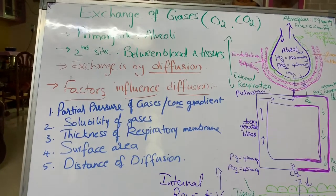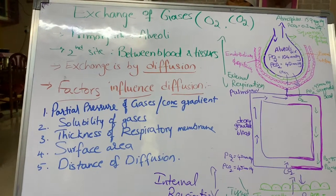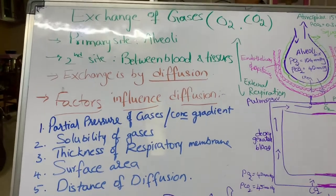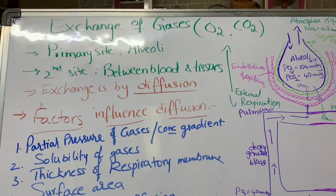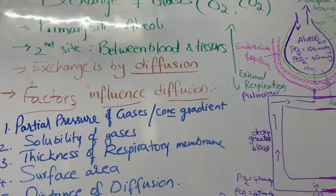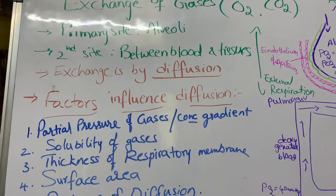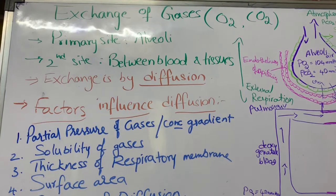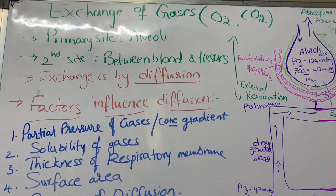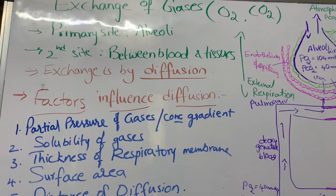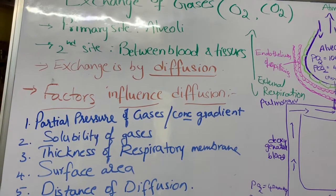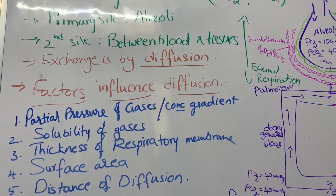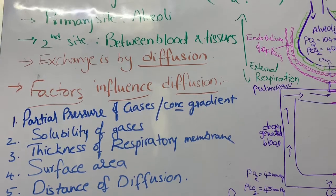The second site for exchange of gases is between the blood and the tissues. The exchange of gases is carried out by a process known as diffusion — a process in which gases move from higher concentration to lower concentration of the respective gas.